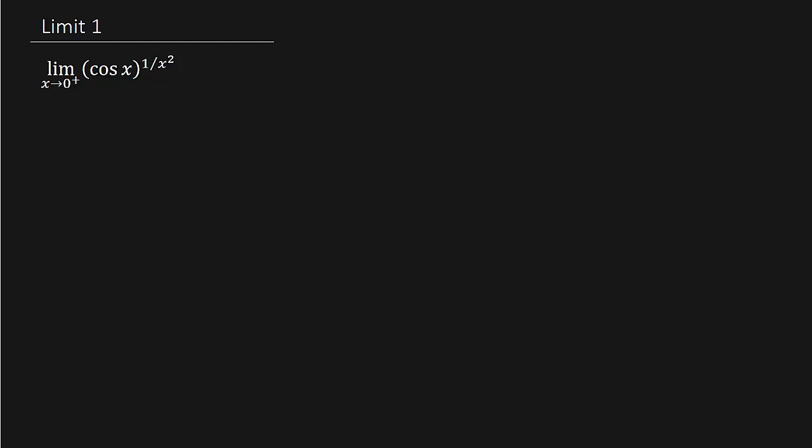How's it going everybody? Got another video here for you. We're going to find a limit. We've got the limit of cosine x raised to the 1 over x squared, and we're taking the limit as x goes to 0 from the right.